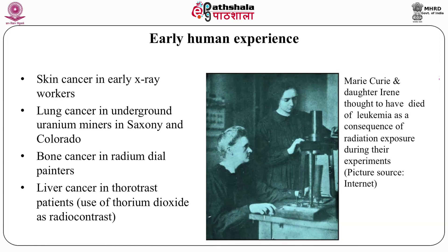Liver cancer was detected in thorotrast patients. What is thorotrast? It is a contrast agent made up of thorium, a radioactive material. People were given it for radiography purposes, not knowing it could cause harm. Since thorium is radioactive and got deposited in the liver when ingested, there were liver cancer cases. In fact, Marie Curie and her daughter Irène Curie are thought to have died of leukemia as a consequence of radiation exposure during their experiments with radiation.